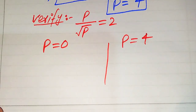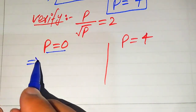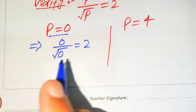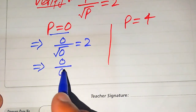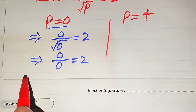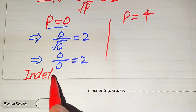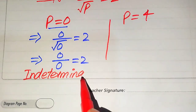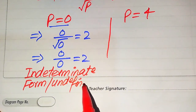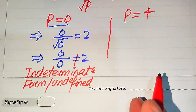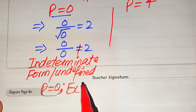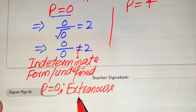We substitute p equals 0 into the equation: it becomes 0 divided by square root of 0 equals 2, which gives 0 divided by 0 equals 2. This is the 0/0 indeterminate form, which means the left hand side is undefined. Since both sides are not equal, we conclude that p equals 0 is an extraneous root.